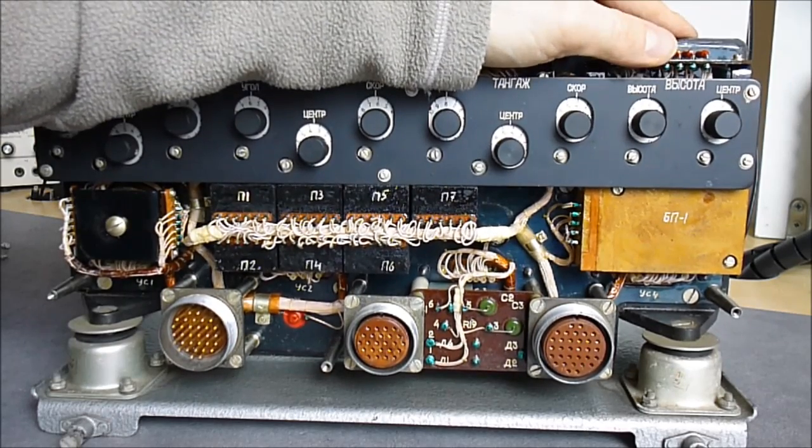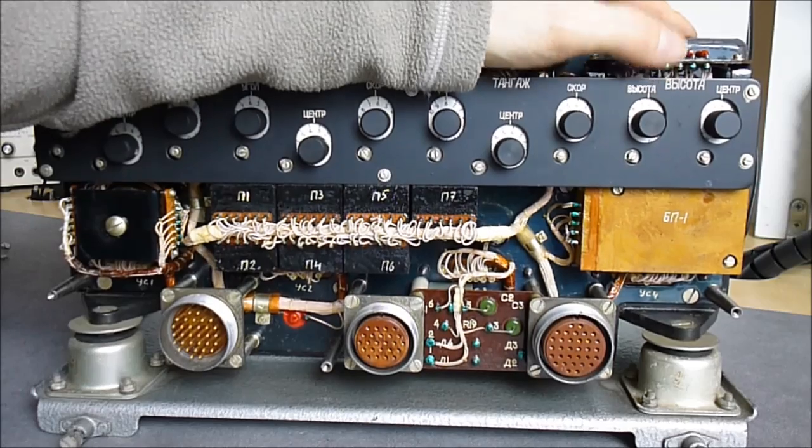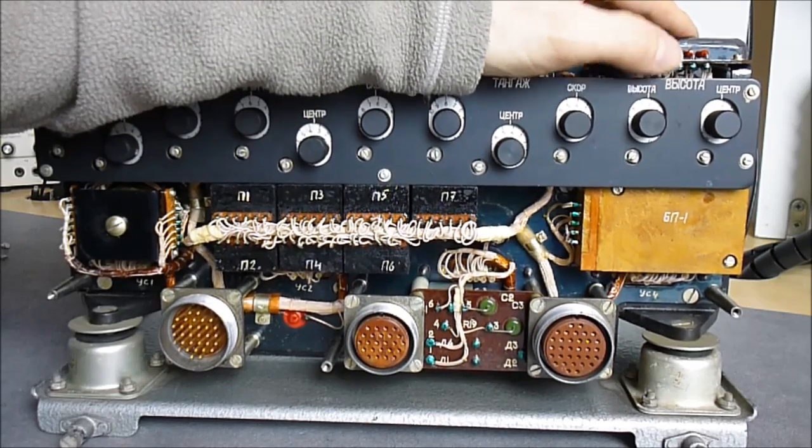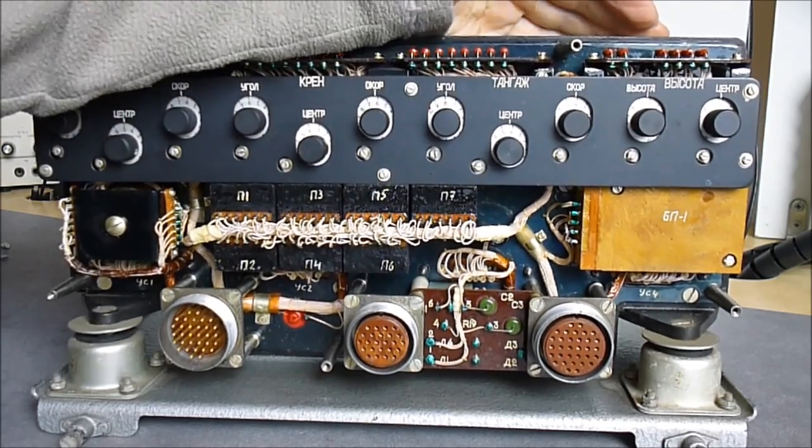So, here are the four channels. Arpraviennier. Cray. Tangage. Bicota. It is visota. It is either altitude or speed. I do not remember. Yes, it is altitude.